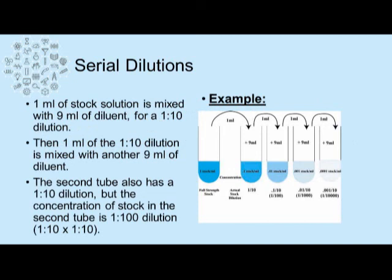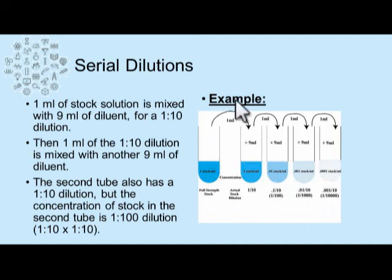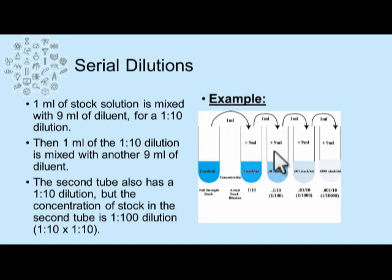In our last presentation, we had one mil of stock solution mixed with nine mils of diluent to give a one to ten dilution. That is a single dilution, but we can take that a step further by having a series of tubes with nine mils of diluent in each one. With the first tube, we take one mil of the stock solution, add it to nine mils of diluent — one plus nine gives a total volume of ten — giving us a one to ten dilution. For the next sample, we take one mil of this and add it to nine mils of the next tube of diluent: another one to ten dilution, and so on.